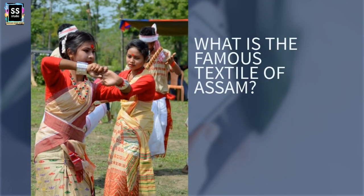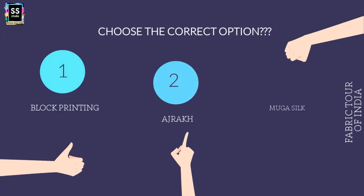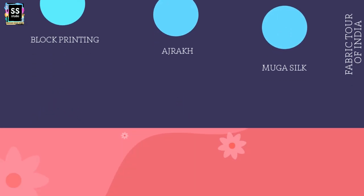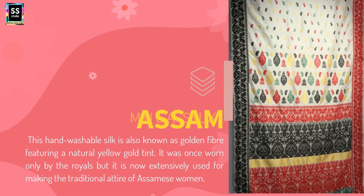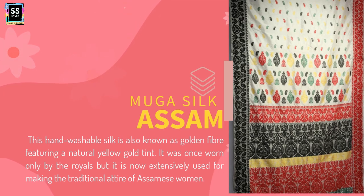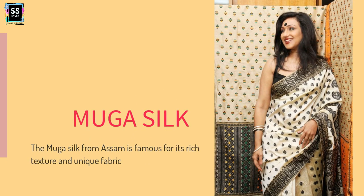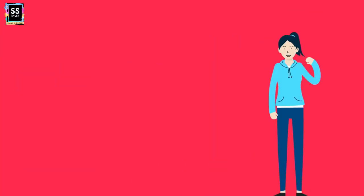State 10 on our list: Which is the famous textile of Assam? The options are: Is it Block Printing? Is it Ajrak? Or is it Muga Silk? Block Printing and Ajrak are techniques done on any fabric, so it is Muga Silk. This hand-washable silk is also known as Golden Fiber, featuring a natural yellow-gold tint. Muga Silk is from Assam and is famous for its rich texture and unique fabric.